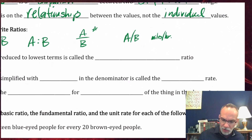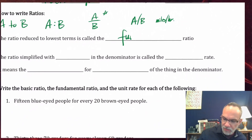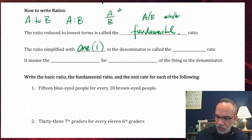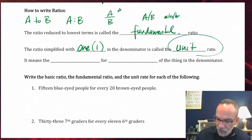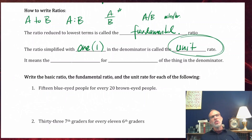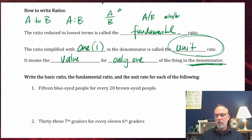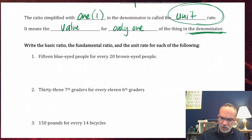When you reduce a ratio to lowest terms, it's called the fundamental ratio. A ratio simplified with a 1 in the denominator is called the unit rate — this is really important because it's usually what you use to compare things. It means the value for only one of the thing in the denominator, so the bottom number is 1 and you're just looking at the top number.